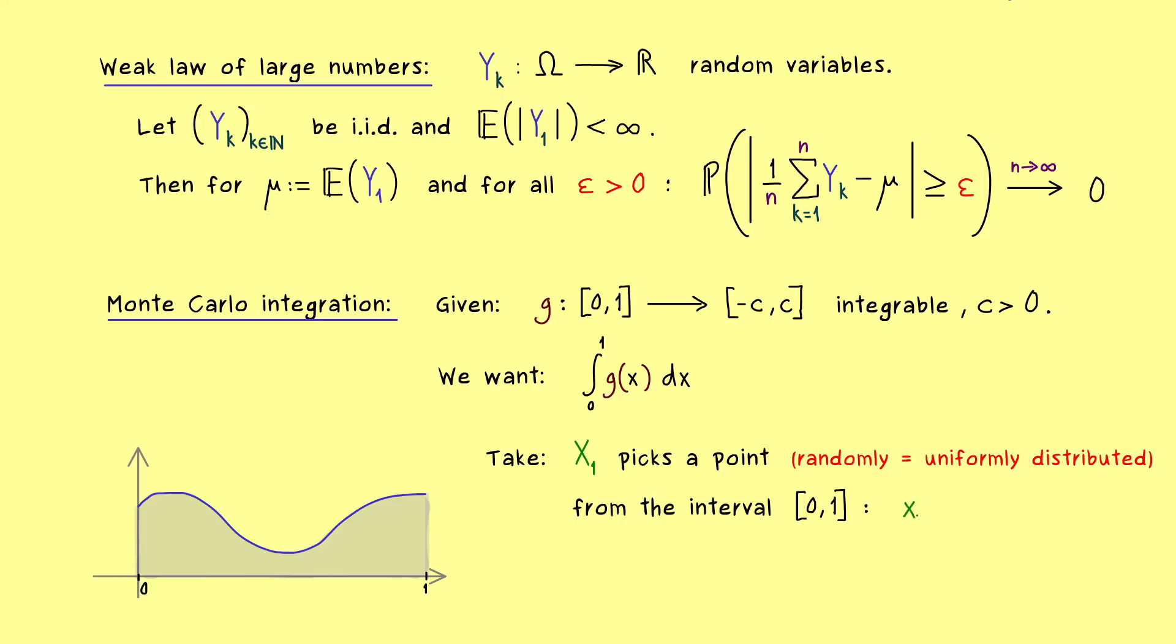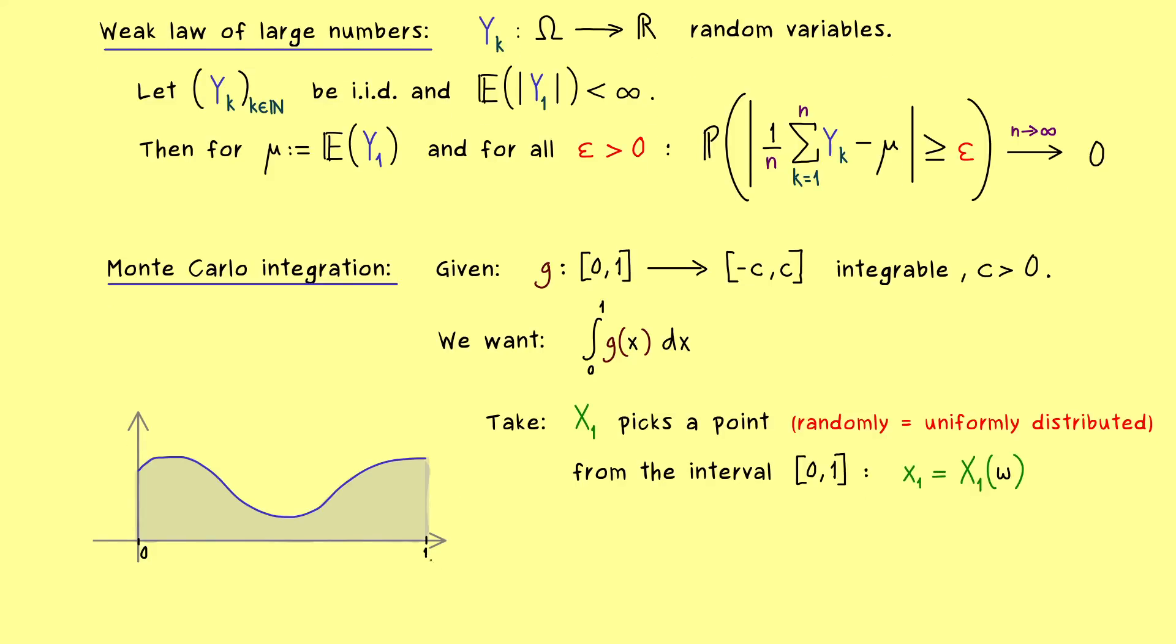And of course if we say randomly here we mean that we have the uniform distribution of the unit interval. Therefore what we get here is a real number we can call lowercase x₁. And now we know it lies somewhere here on the x-axis. Hence we also get a corresponding value on the graph of the function. So we also find g here on the y-axis.